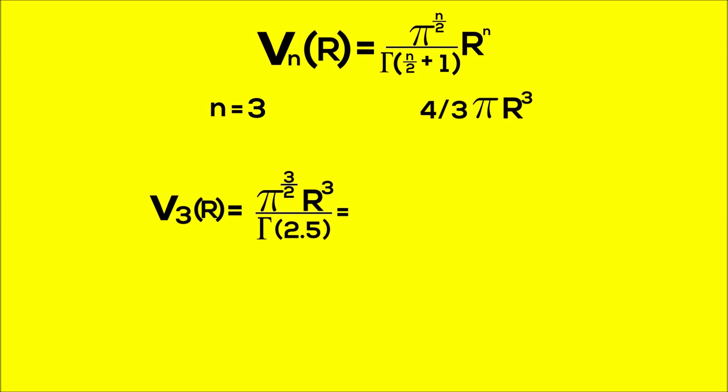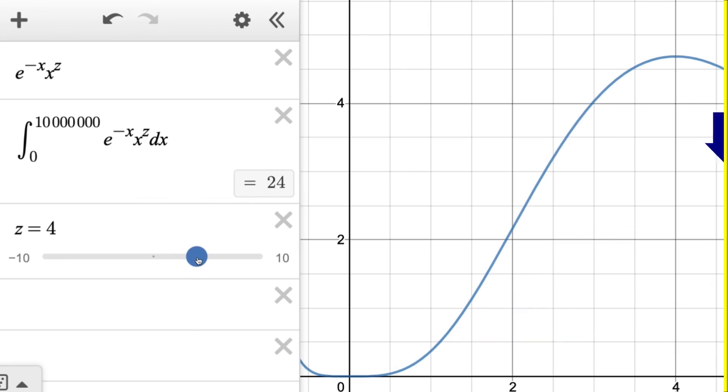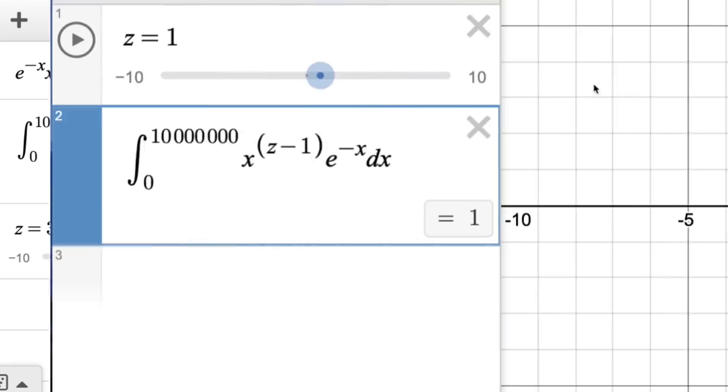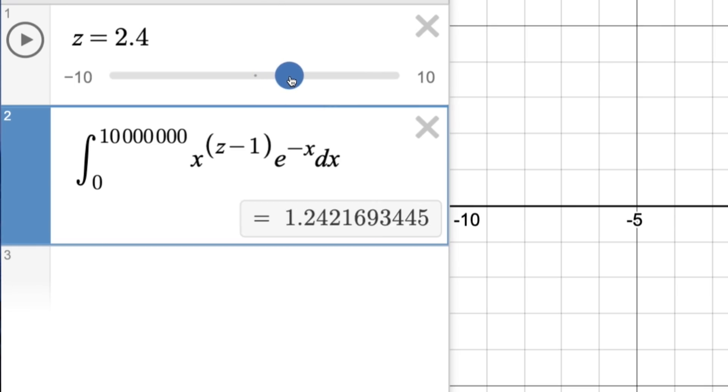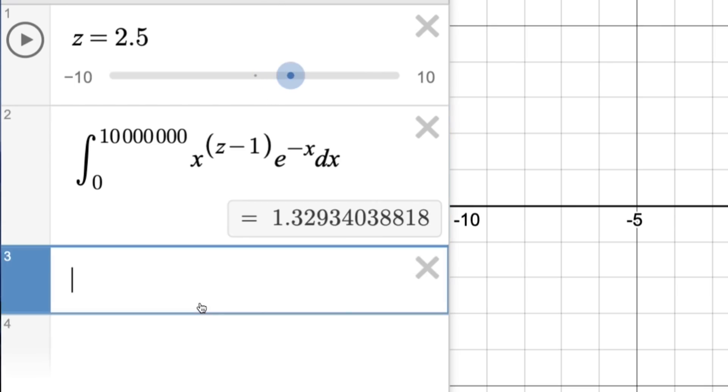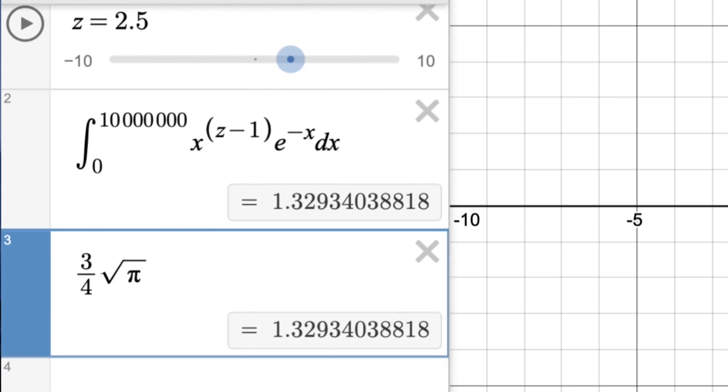Now, gamma of 2.5 would be the same as 1.5 factorial. And in the last video, I showed how we could slide the exponent within the gamma function to calculate any number factorial. So I'll just do the same here with 2.5. We get roughly 1.329, which is the same as 3 fourths times the square root of pi.